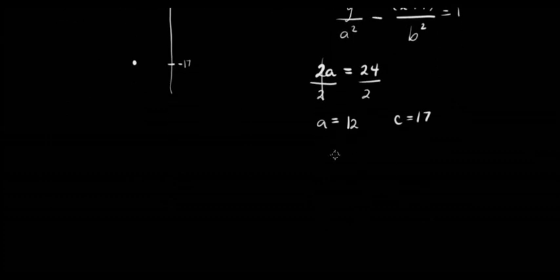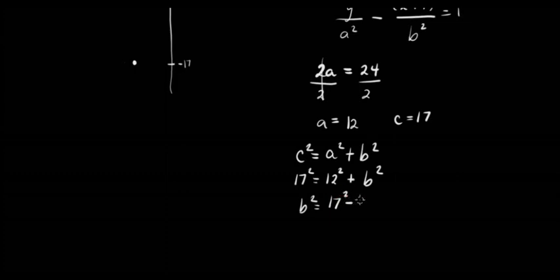From the lemma for hyperbola, we know that c² = a² + b². Therefore, we have 17² = 12² + b², so b² = 17² - 12². This is the difference of two squares, so we can have (17 - 12)(17 + 12) = 5 × 29.